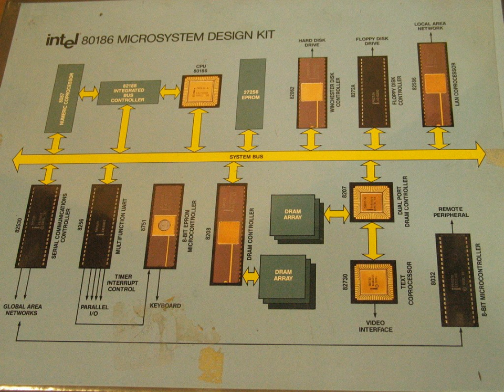The internal ROM monitor offered the following commands: S – Substitute memory, displays and modifies memory locations; X – Examine/modify registers, displays and modifies 8086 registers; D – Display memory, displays memory content; M – Move, moves block of memory data; I – Port input, receives data from input port; O – Port output, sends data to output port; G – Go, execute user program; N – Single step, execute single program instruction; R – Read file, read object file from tape to memory; W – Write file, writes block of memory to tape.